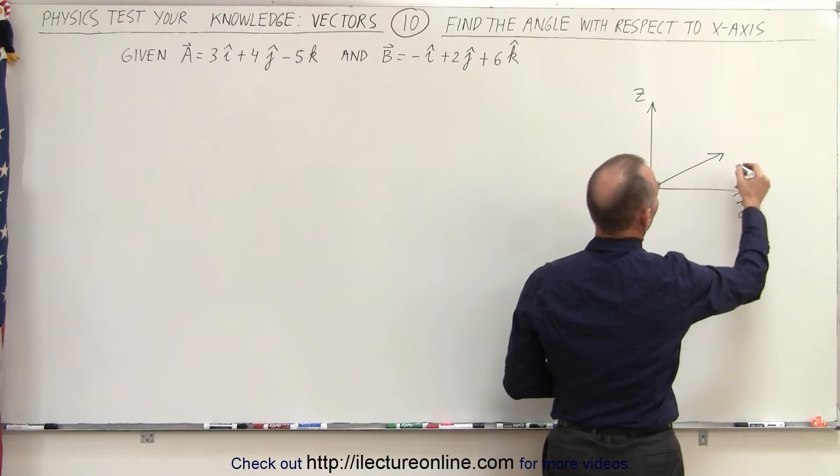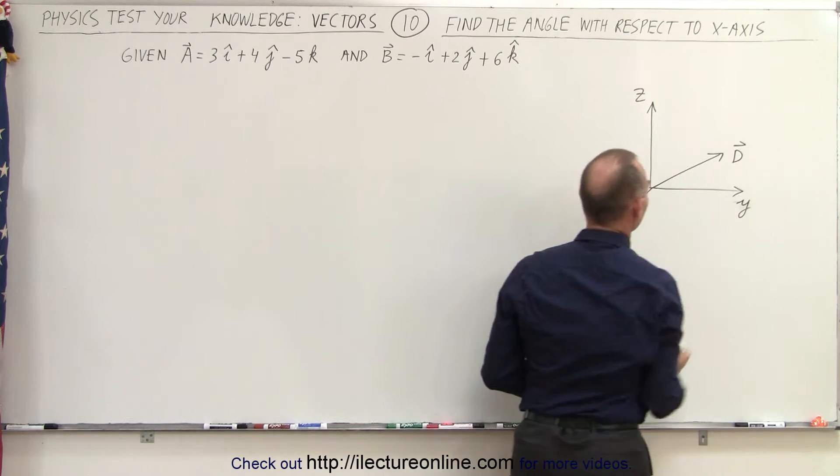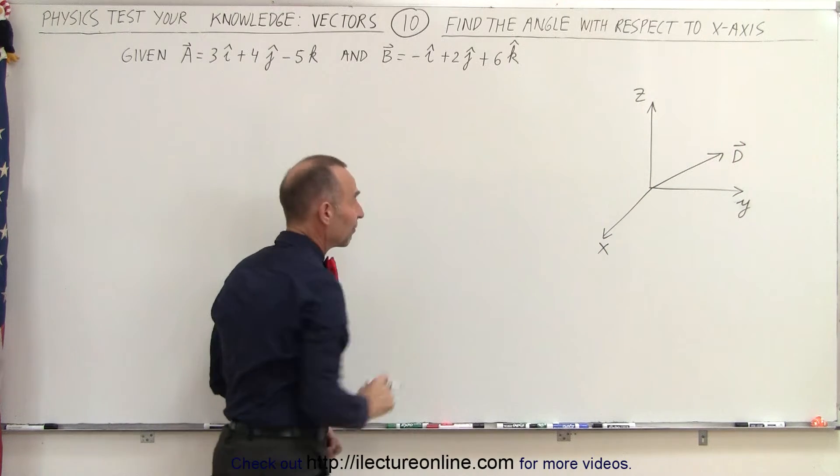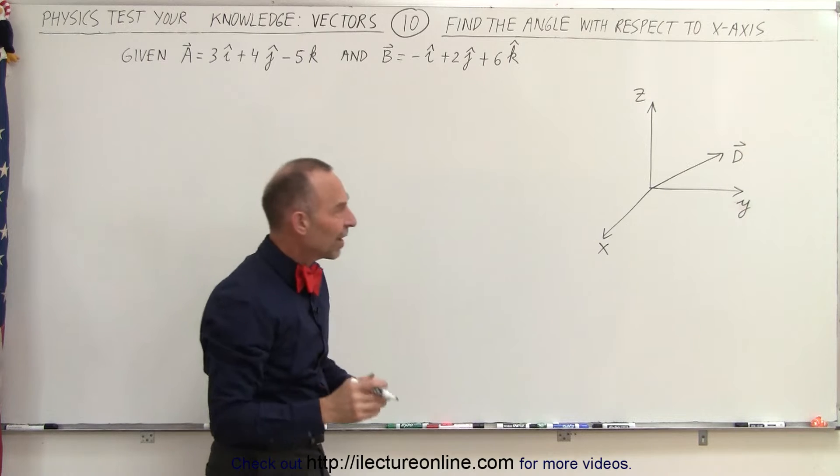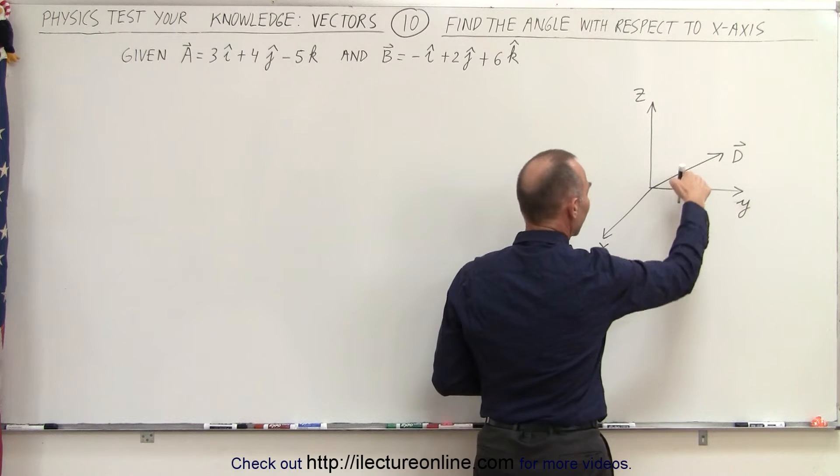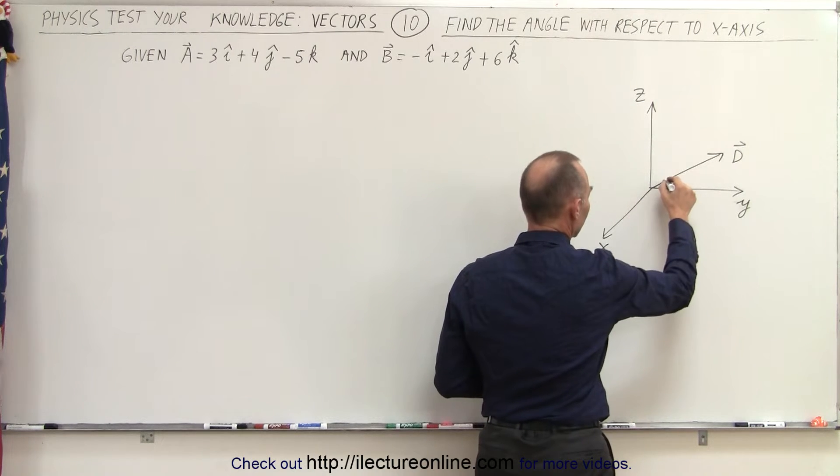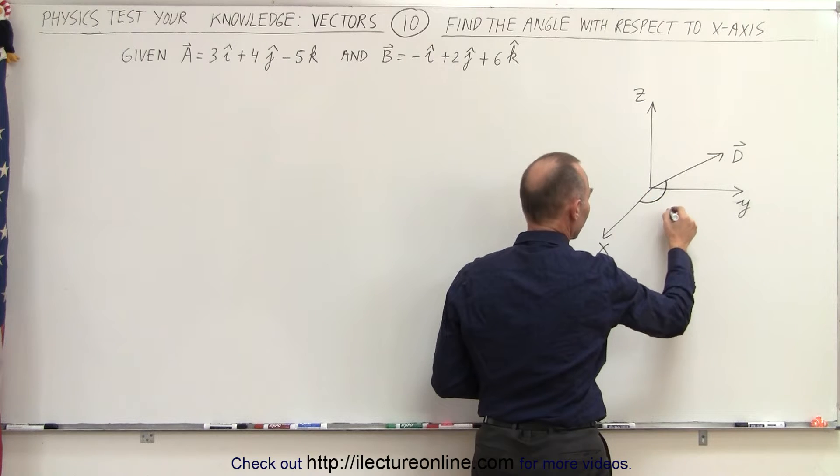let's call it vector d. All right, because I want it to be different from what we have up here. So how do we find the angle between that particular vector and x? So let's call that angle alpha.